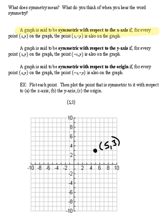Okay, the definition said if we've got a point at some (x,y), then the point (x,-y) is also on the graph. So that means the same exact x value but the opposite sign for the y value. So if I use this point with the same x value but opposite sign for the y, that would be the point (5,-3), which would be right down here.